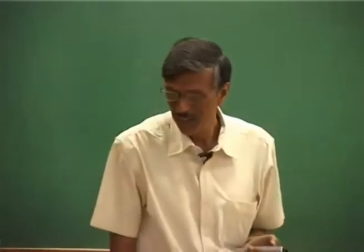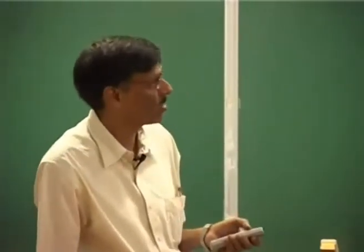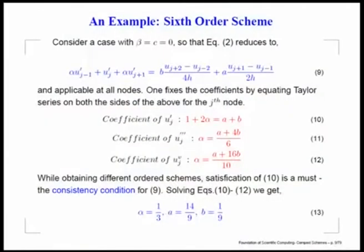We were looking at high accuracy methods of computing and in that context, we were talking about compact schemes. A typical example is given in equation 9, where the derivatives — the prime quantities on the left hand side — are related to the function on the right hand side. You can see that these are implicit methods, because the derivatives that we are looking for are coupled in this equation, as opposed to explicit methods. There are some constants alpha on the left hand side, and a and b on the right hand side, h is the spacing between the nodes. You can equate the coefficients of Taylor series on both sides, and when you equate the coefficients of u prime on the left hand side, you note it gives you 1 plus 2 alpha, and on the right hand side it is a plus b.